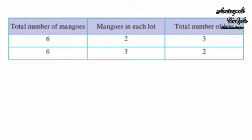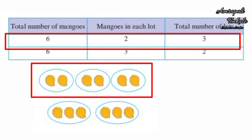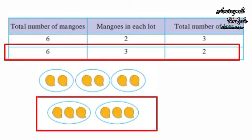The table below shows how Sucheta distributed the mangoes. Total number of mangoes is 6, mangoes in each lot are 2, and total number of lots is 3. In the second case, total mangoes are 6, mangoes in each lot are 3, total number of lots are 2.